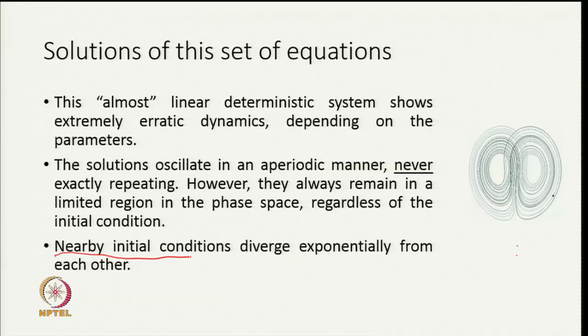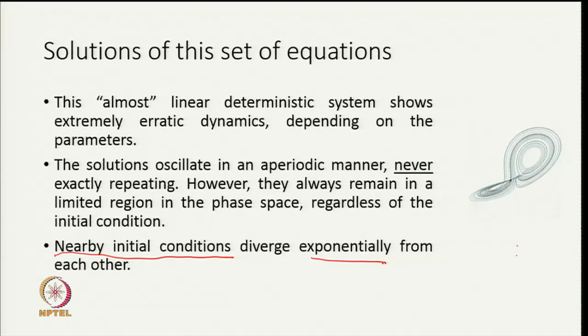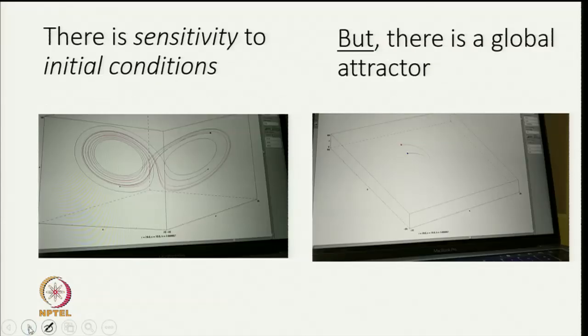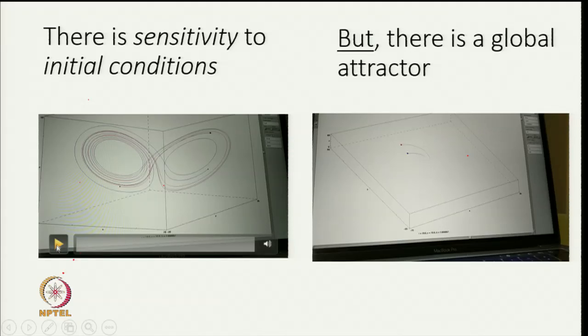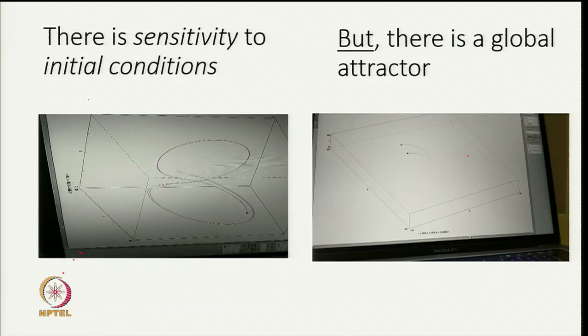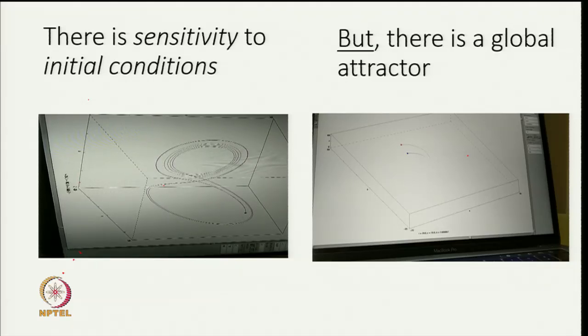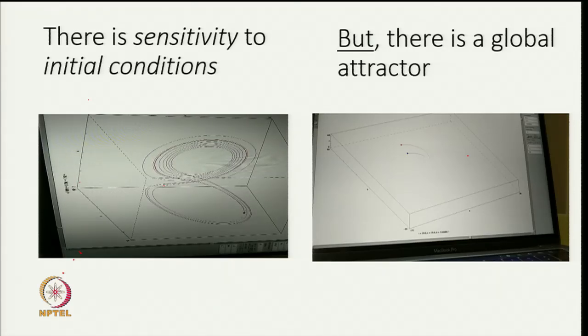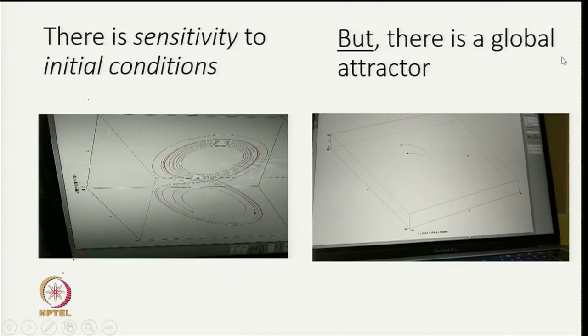Lorenz's great observation was that nearby initial conditions diverge exponentially rapidly from each other. To show sensitivity to initial conditions, let us start two orbits from a point very close to one another and follow them as the equations are integrated. The orbits move together for some period of time and at a certain point they move on to different branches of this attractor. Once they have moved to different branches these orbits are as far from each other as the system will allow.